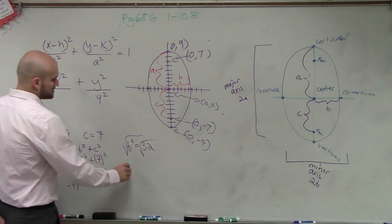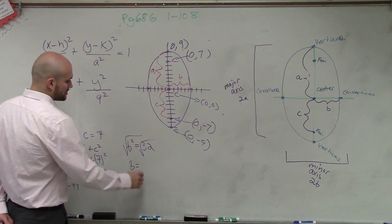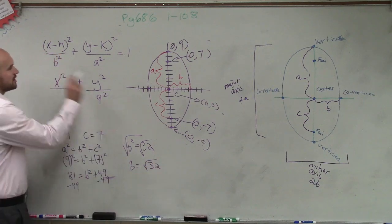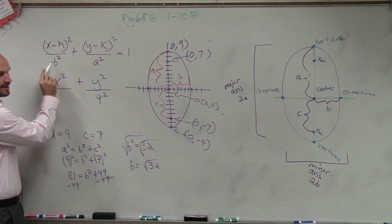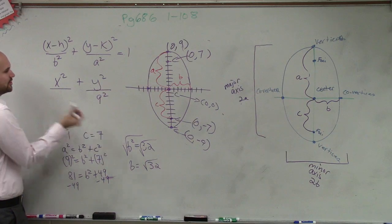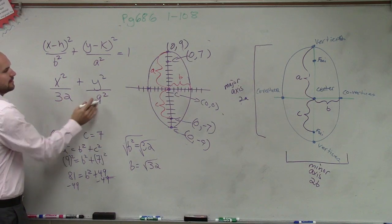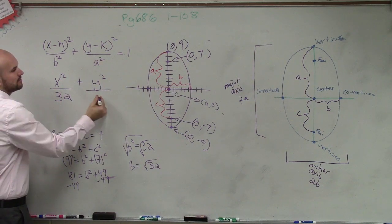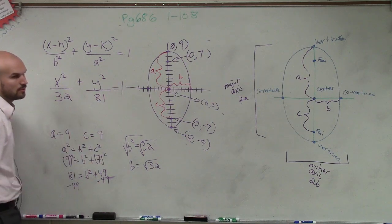Square root both sides. So b equals the square root of 32. However, in our formula, they're asking for what b squared is. So what was b squared? 32. And then 9 squared we know is equal to 81. And we know this answer equals 1.